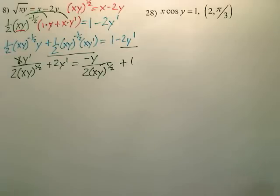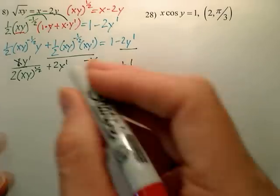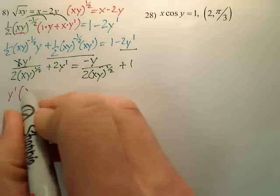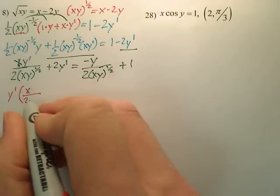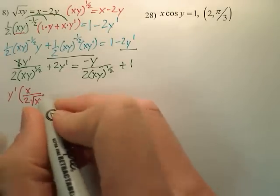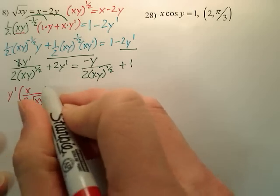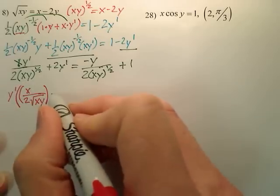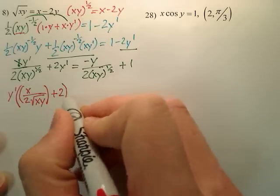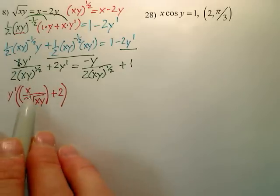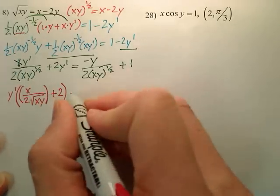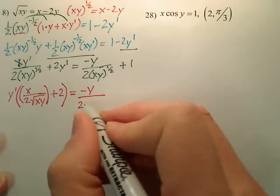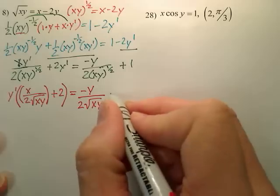Next step is to get the y prime by itself. So to get the y prime off GCF-wise, you yank the y prime out, leaving you with x over 2. And you could actually write this as square root of xy if you want. That's the first piece, plus 2. When I pull out the y prime, are you okay with those two pieces? Equals negative y over 2 square root of xy, plus 1.